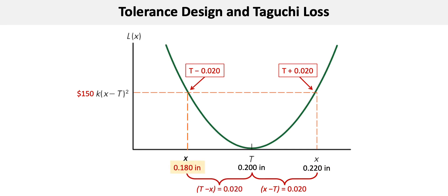A deviation of T minus 0.02, where x would then equal 0.180, still incurs a loss of $150.